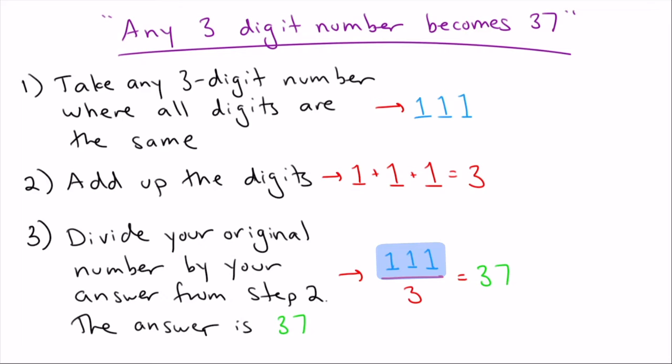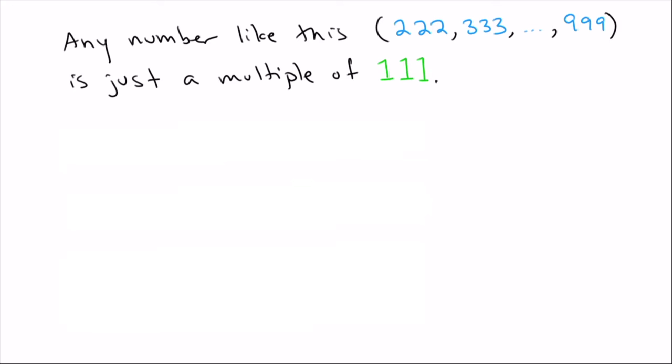Finally, take your original numbers, the 111 and divide it by what you got in step two. So we started with 111 in step two, and we added up the digits, we got three. So we divide those two and we get 37. As the title of the problem suggests, you're always going to end up with 37, even if you had done 222 or 333 or whatever number you started with. So again, let's look into what's going on here.